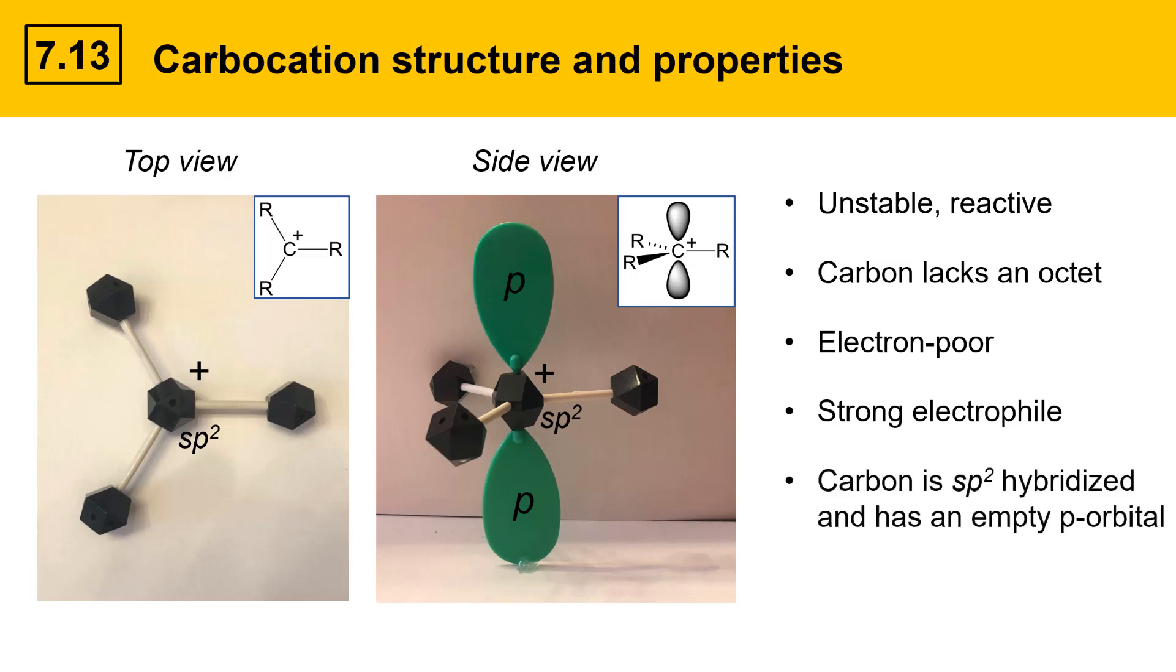The carbon is sp2 hybridized and it has an empty p orbital and also has trigonal planar geometry. That means that we get bond angles of 120 degrees which is shown over here. The carbocation is planar in the vicinity of the carbocation carbon and that'll become important when we look at reaction mechanisms for the SN1 reaction in a little bit.